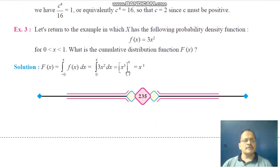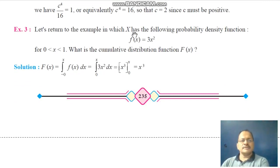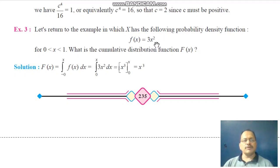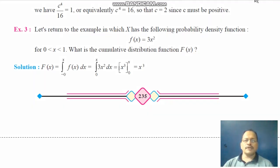Returning to the example with f(x) = 3x², let us find the cumulative distribution function. Capital F(x) = ∫₀^x f(t) dt = ∫₀^x 3t² dt = x³.